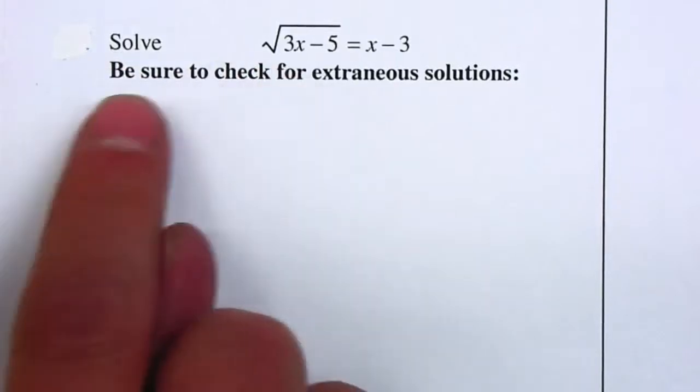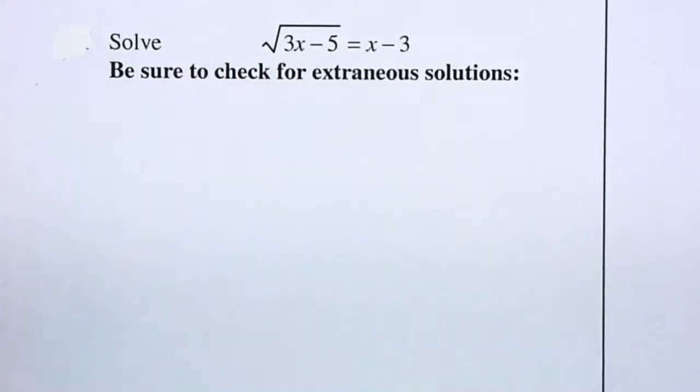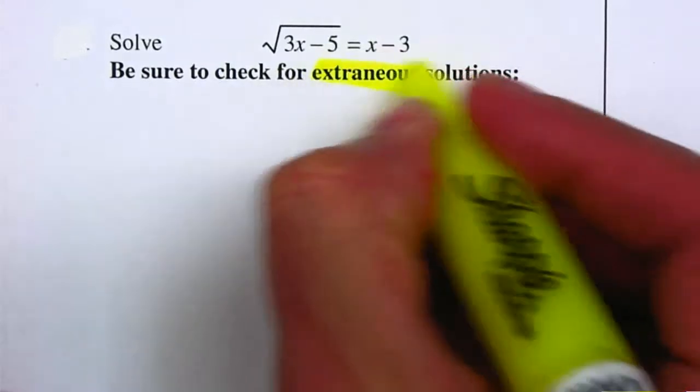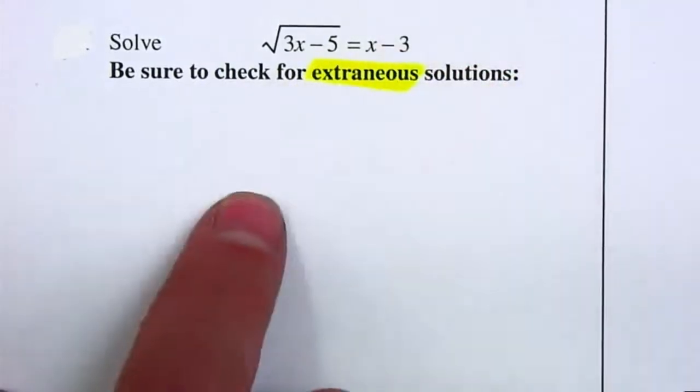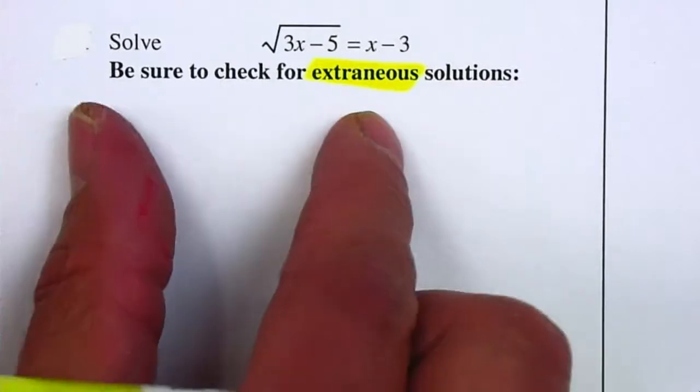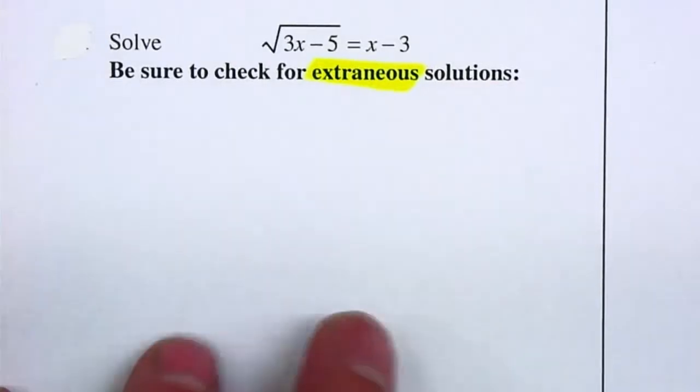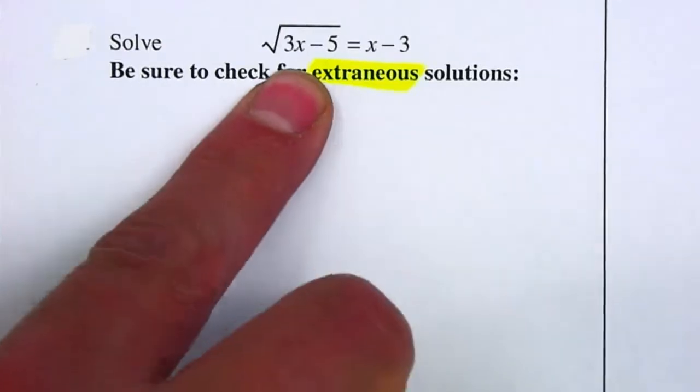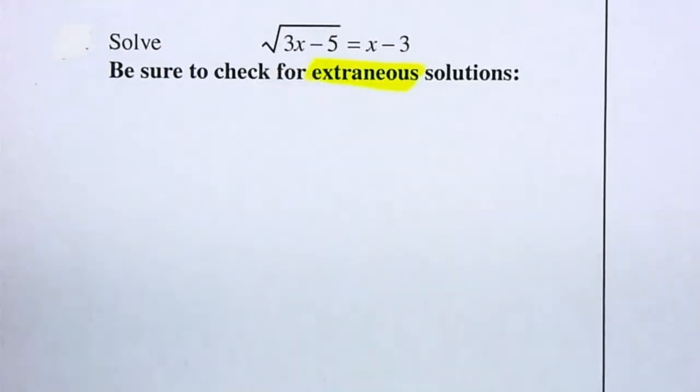Solve the polynomial equation and be sure to check for extraneous solutions. Remember, extraneous solutions are solutions that you might get but might not be correct. So you're going to do everything correct but you might end up with one or two solutions and they might be extraneous. They might not work for this specific equation.